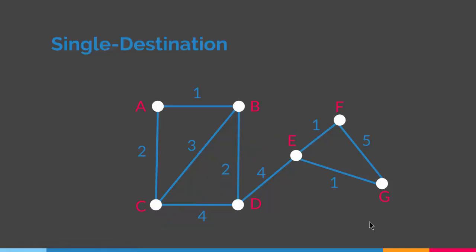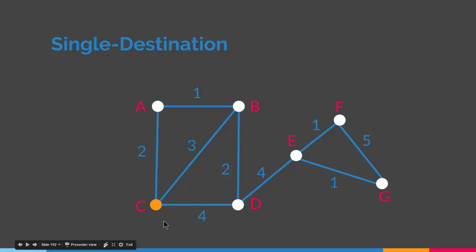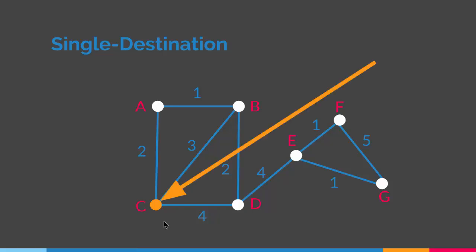Then we have the single destination shortest path problem, which is opposite to the single source problem. Here you have a destination — for example, C — and you find the shortest path from all the other vertices to C. In the single source problem we found the shortest path from the source to the rest of the vertices, but in the single destination problem we find the shortest path from the rest of the vertices to our destination.